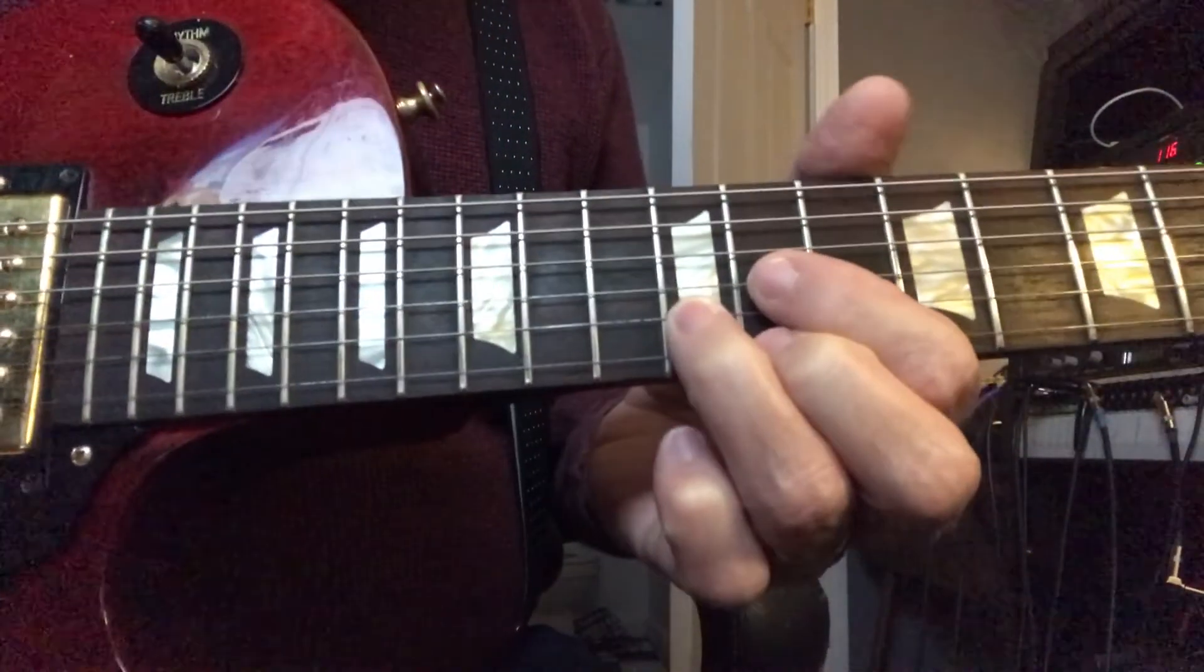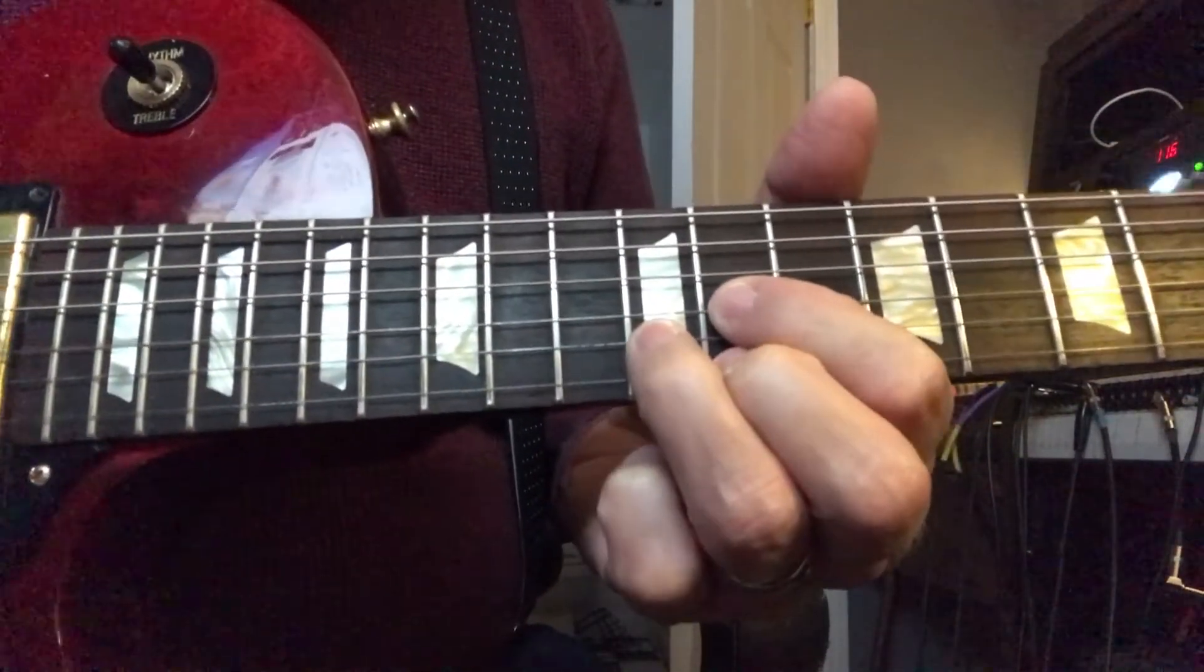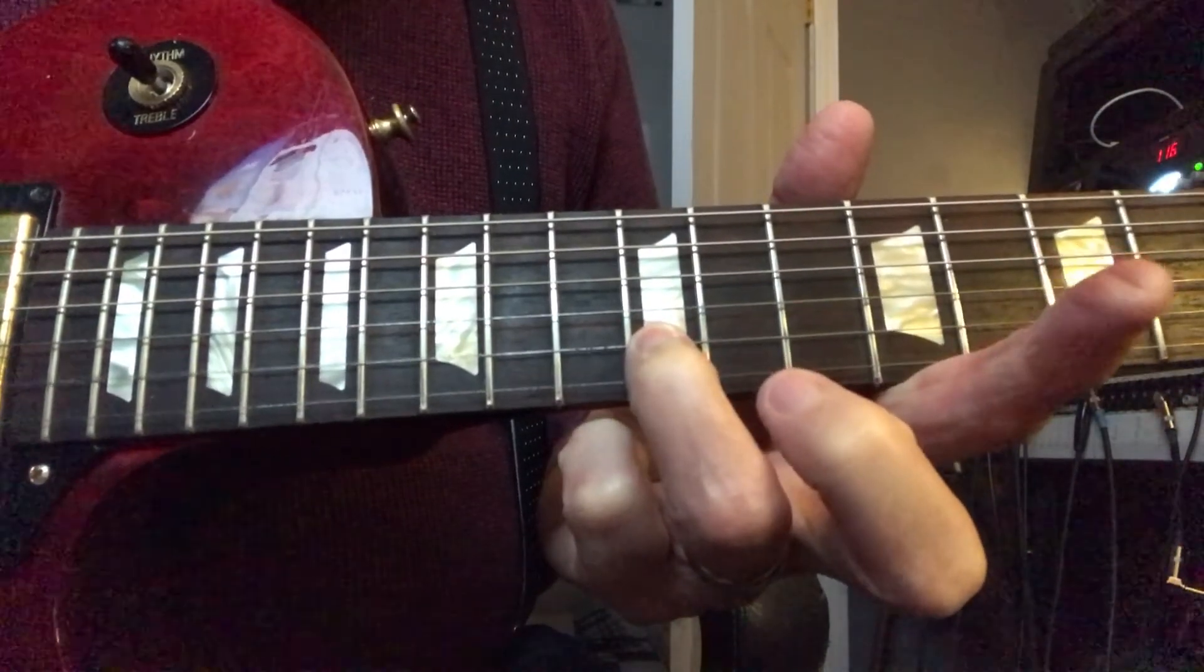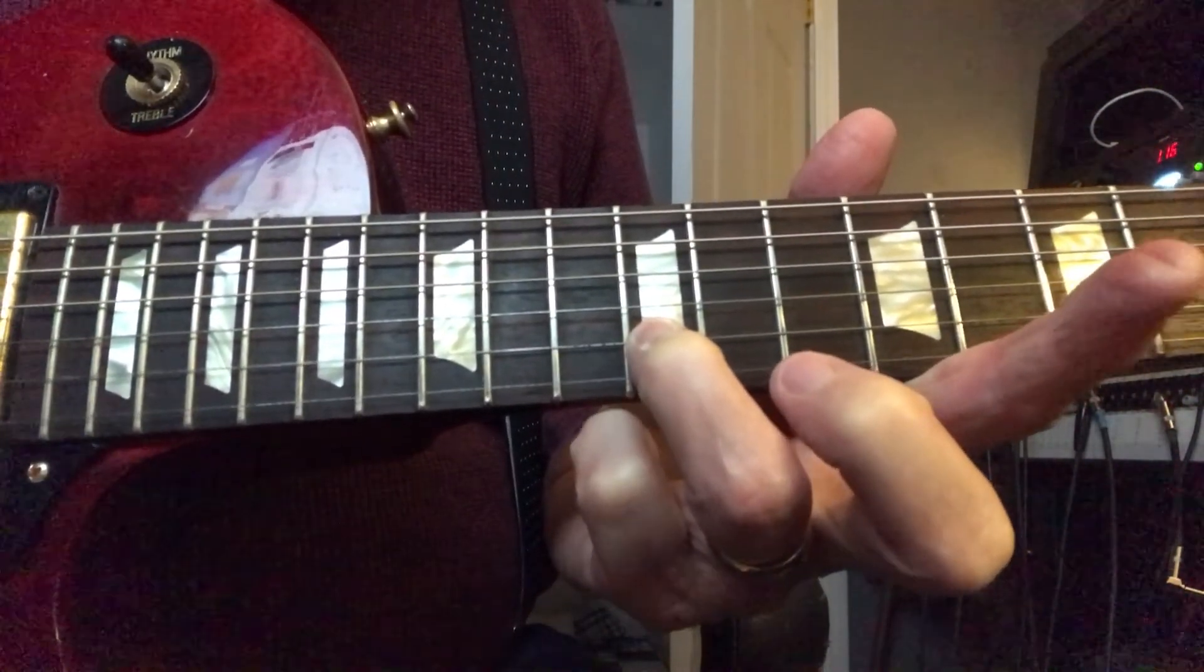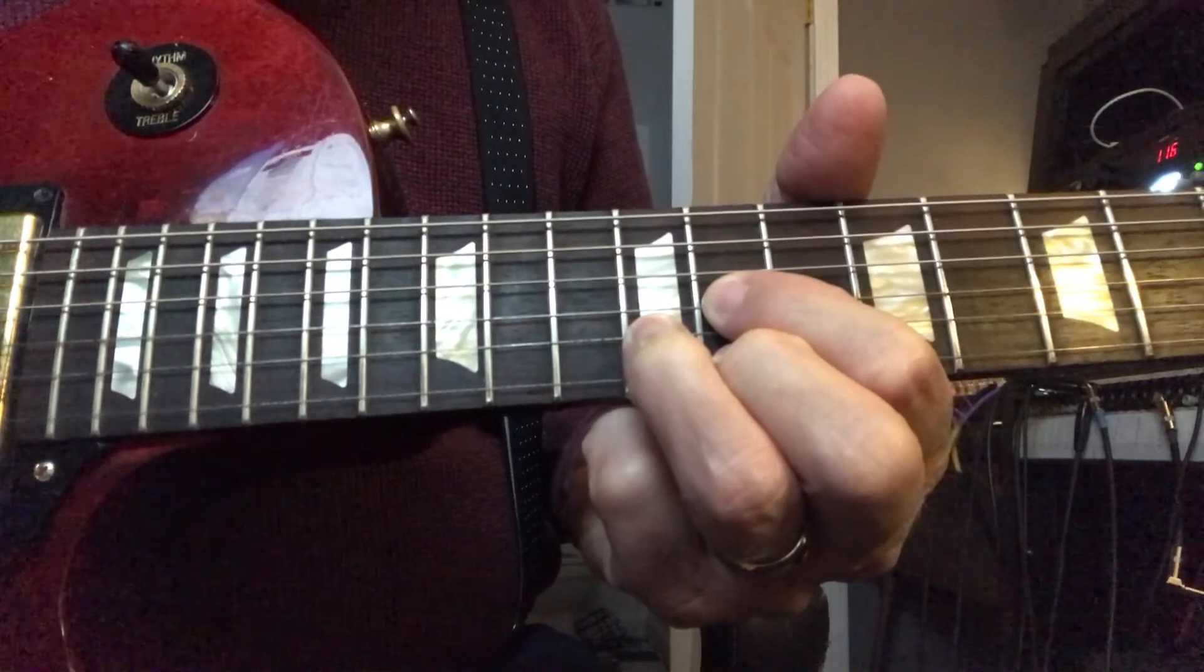And so you can also see if you go all the way up to the 12th fret with the same positioning on the B string, that is a B, and so that is a B chord.